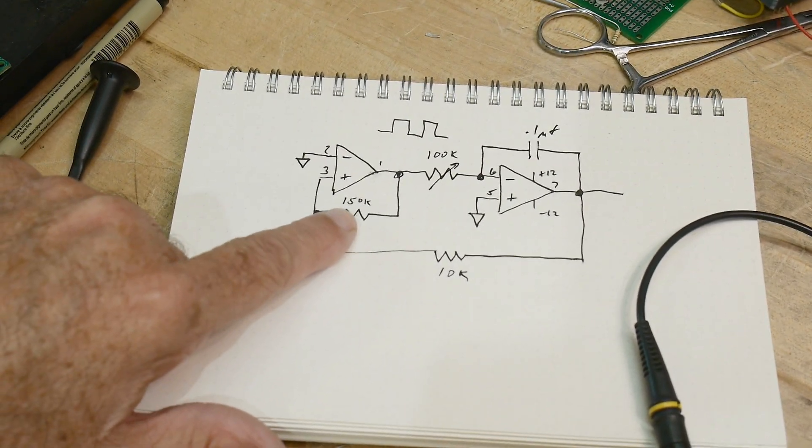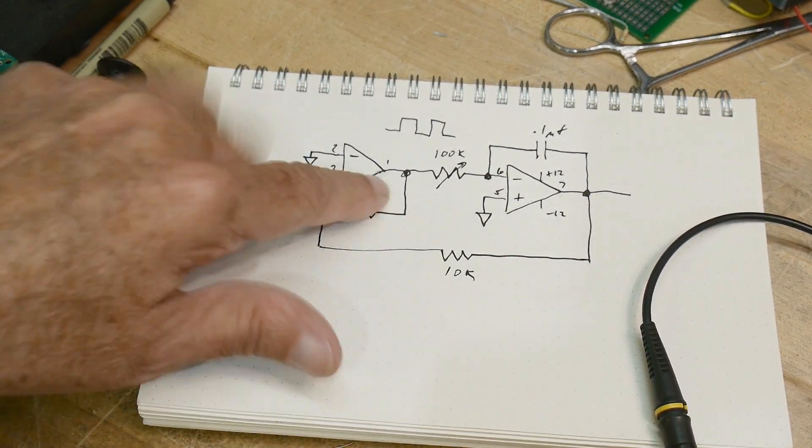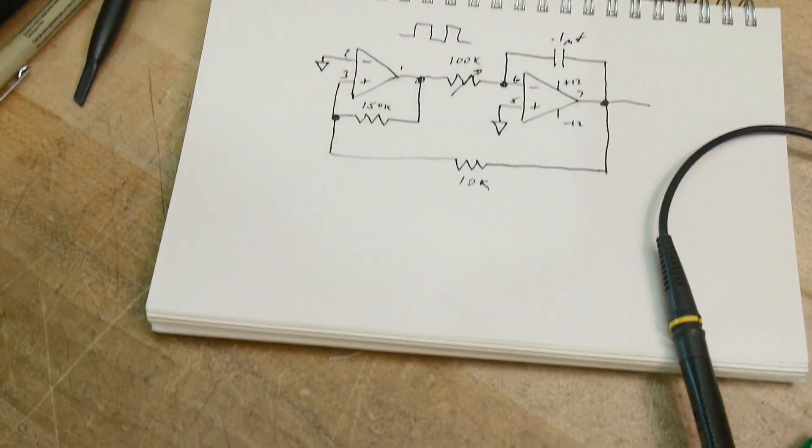—a divider here in the circuit. This 150k and 10k kind of does a divide by 15 type of thing here.